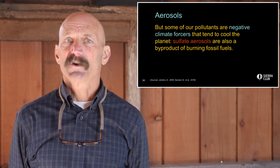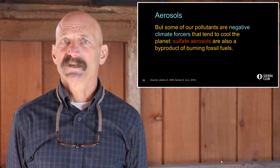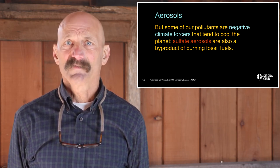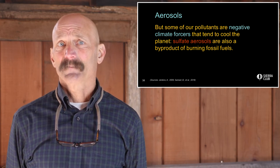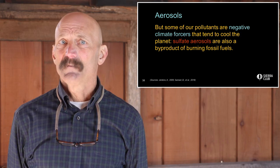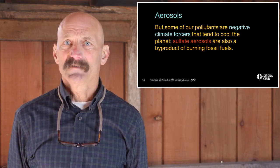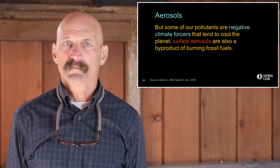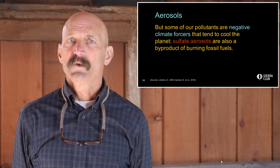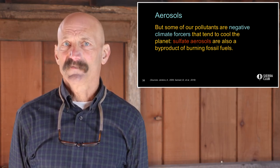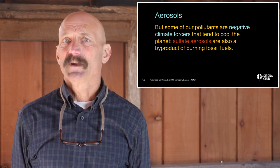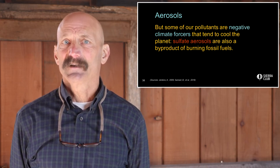But some of our pollutants are actually negative climate forcers that tend to cool the planet. At the top of the list are the so-called bright sulfate aerosols that don't get much attention. Like CO2, they are a byproduct of burning fossil fuels, but unlike CO2, they are negative climate forcers that tend to cool the planet. As we decrease emissions from combustion of fossil fuels, we lose the short-lived negative forcing that these aerosols provide, resulting in a net increase in radiative forcing and an increase in heating of the planet.